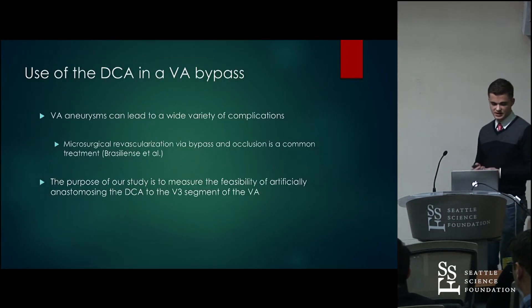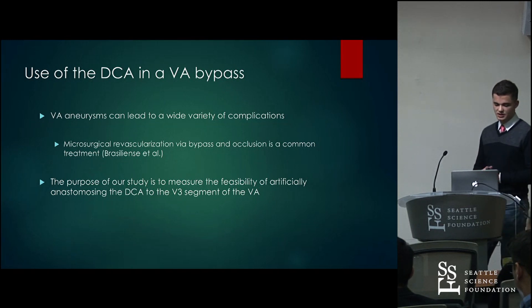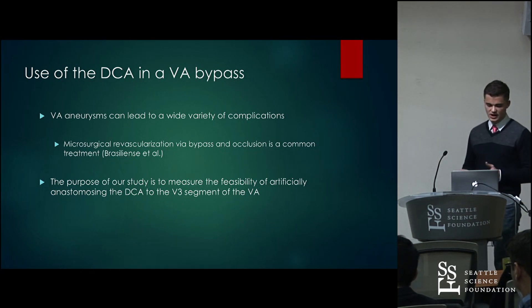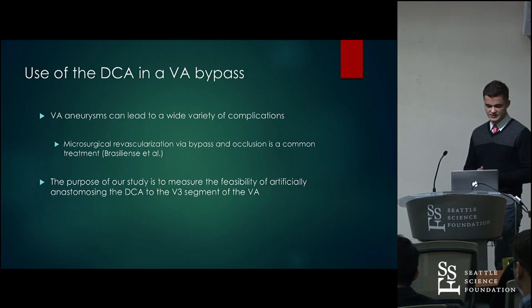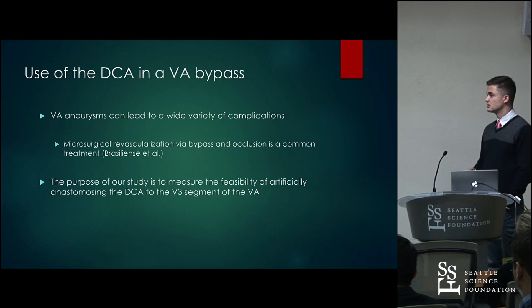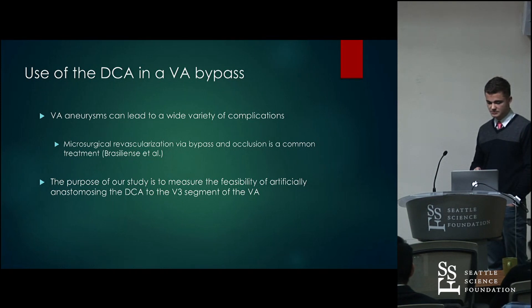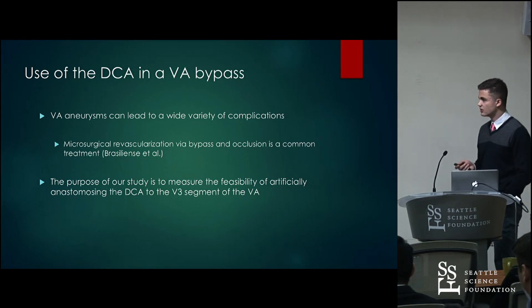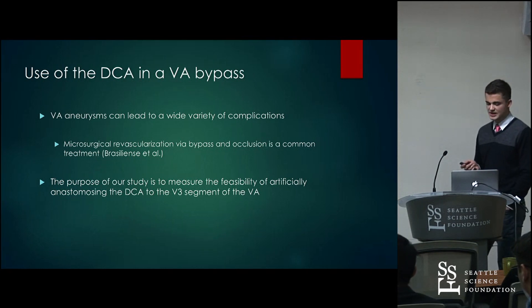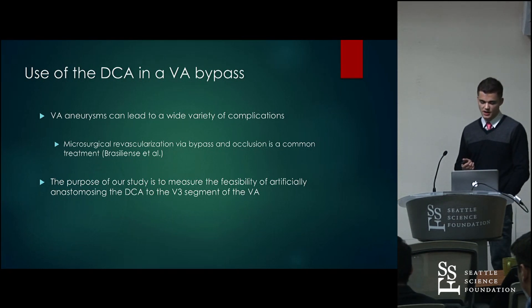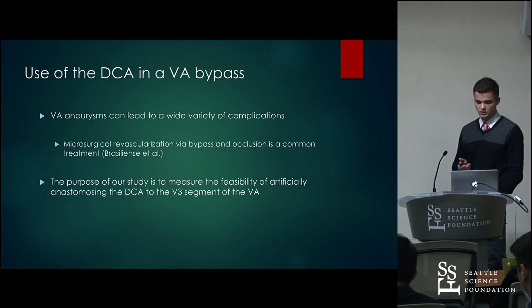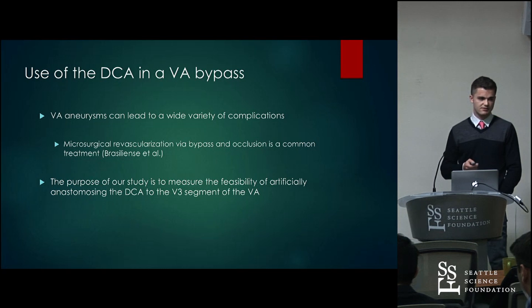Let's talk about the second part of the study, which was assessing the feasibility of using the deep cervical artery in a vertebral artery bypass. Vertebral artery aneurysms can lead to a wide variety of complications, which include hemiparesis, coma, and death. Amongst other forms of treatment, microsurgical revascularization by bypass and occlusion of the affected section of the artery is a common form of treatment for vertebral artery aneurysms. Thinking about using the deep cervical artery to bypass the vertebral artery is outside of the box — more commonly you'll see the radial artery or the saphenous vein being used in autogenous vertebral artery bypasses.